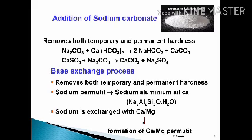The base exchange process is adopted for large water supplies. This process is also called the permutit process and removes both temporary and permanent hardness. Sodium permutit is made up of sodium, aluminium, and silica — Na₂Al₂Si₂O·H₂O — and has the property of exchanging sodium cations for calcium and magnesium ions in the water.